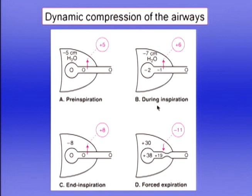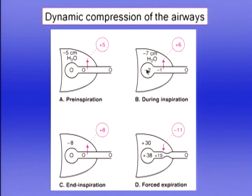During inspiration, the inspiratory muscles contract, alveolar pressure falls to minus 2 cmH₂O, flow begins, and pressures are zero at the mouth, minus 2 in the alveoli, and minus 1 somewhere along the airway. At the very beginning of inspiration, before lung volume changes, the difference between alveolar and intrapleural pressure remains 5 cmH₂O, so intrapleural pressure is minus 7 cmH₂O.